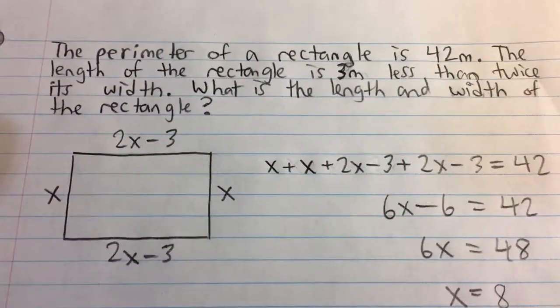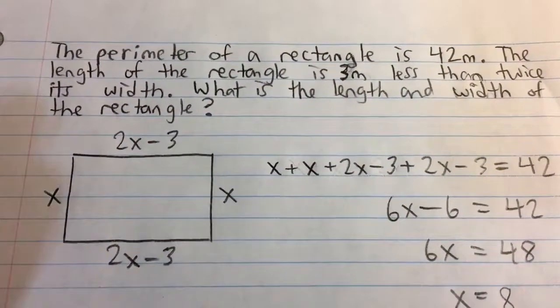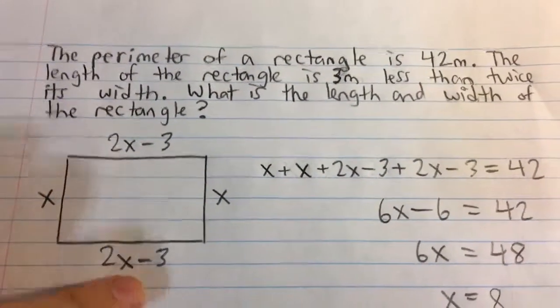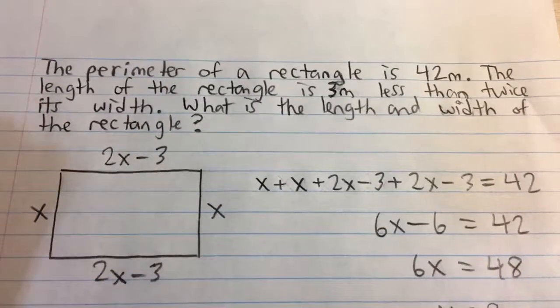That means that the length of the rectangle would be 3 meters less than twice the width. So take twice the width, 2 times x, subtract 3 meters, and that will give you the expression for the length.